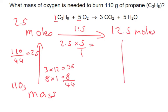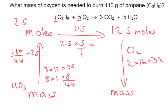Then finally, back down to mass. We're talking about oxygen — O₂ — which is 2 times 16, equals 32. We've got 12.5 moles, so 12.5 times 32. We get a mass of 400 grams.